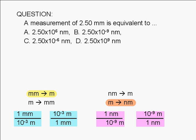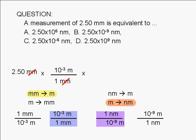Start with the known measurement, 2.50 millimeters, and multiply it by a conversion factor to convert millimeters to meters. Then multiply by a conversion factor to convert meters to nanometers. This gives us an answer of 2.50 times 10 to the 6 nanometers.